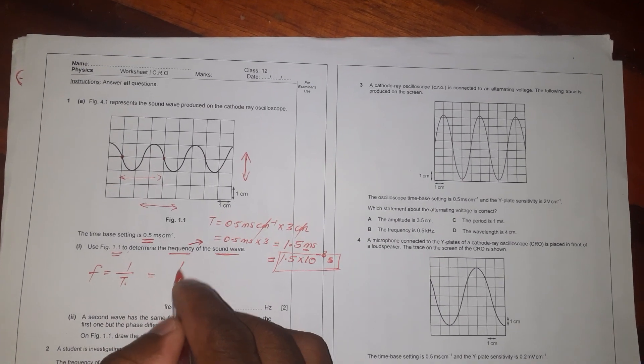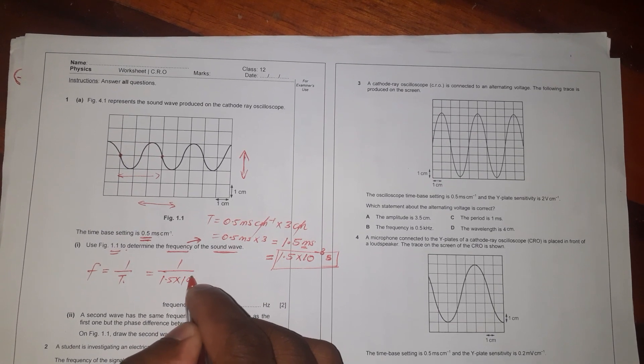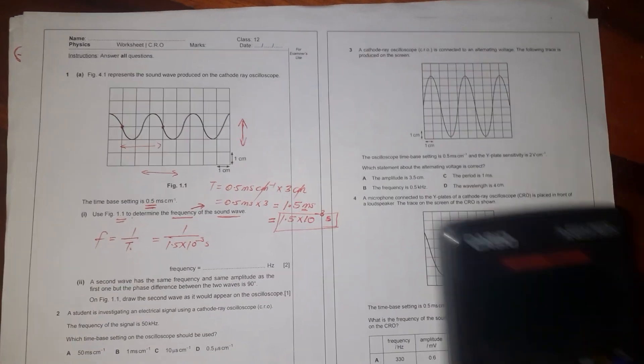Then I have 1 over 1.5 times 10 to the power minus 3 seconds, and then if I can now take a calculator.